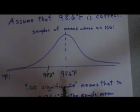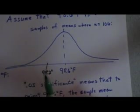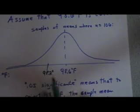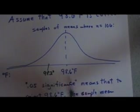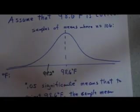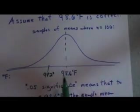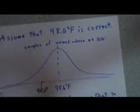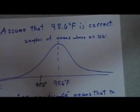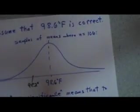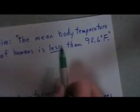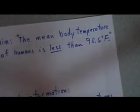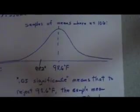The question is, are we significantly far enough to the left, below 98.6, to reject the statement right here, that 98.6 degrees is actually the average temperature? If we can reject this statement, then we can therefore say, well, if it's not 98.6, then it must be less than 98.6.